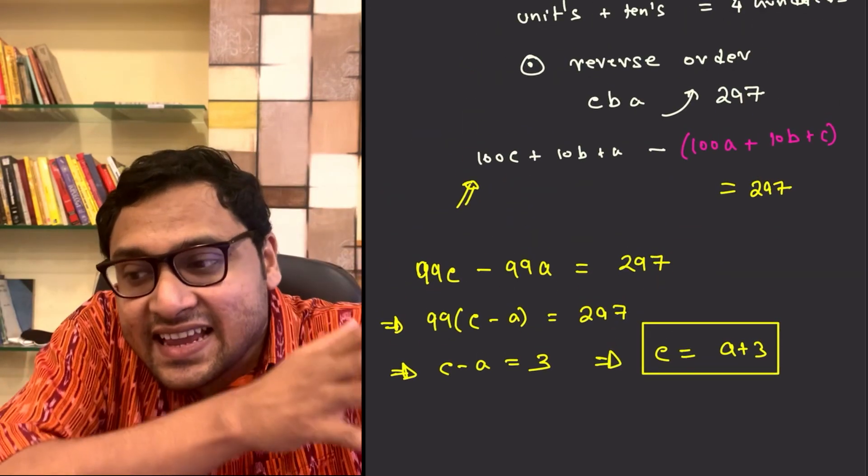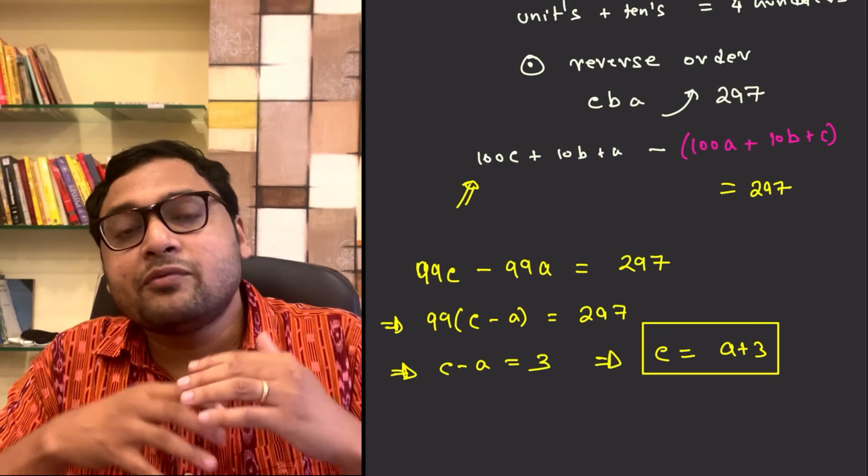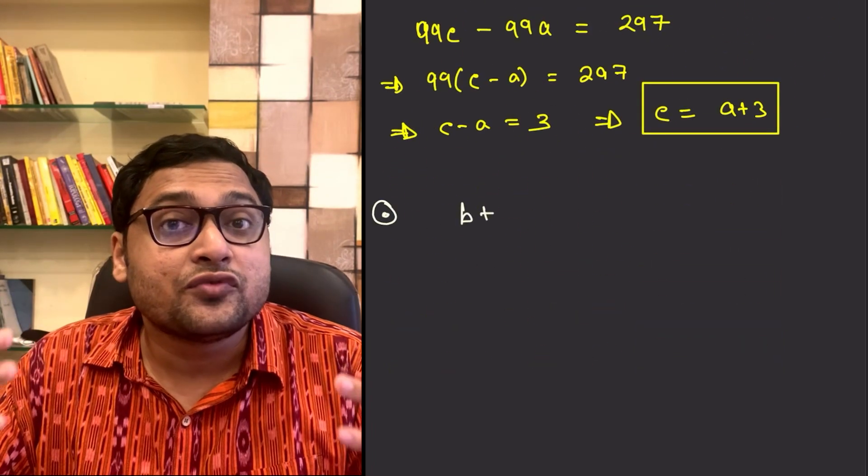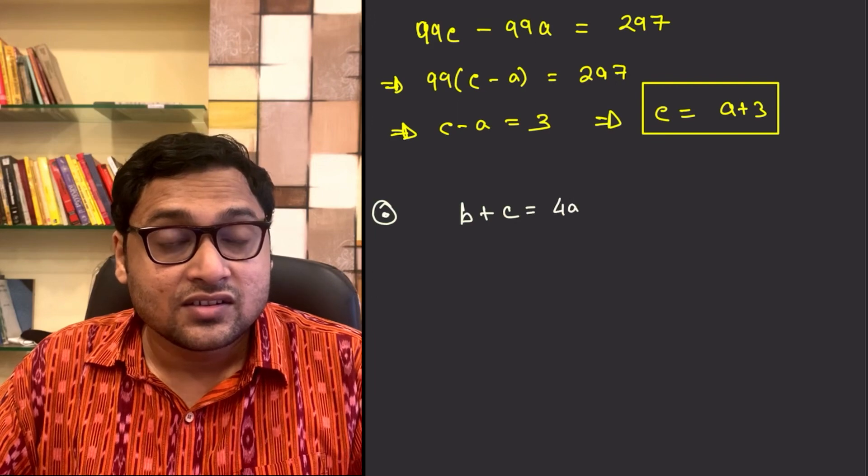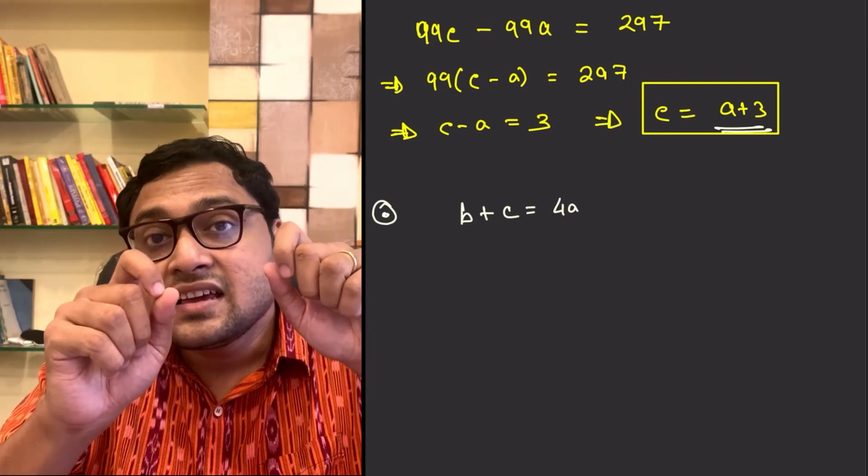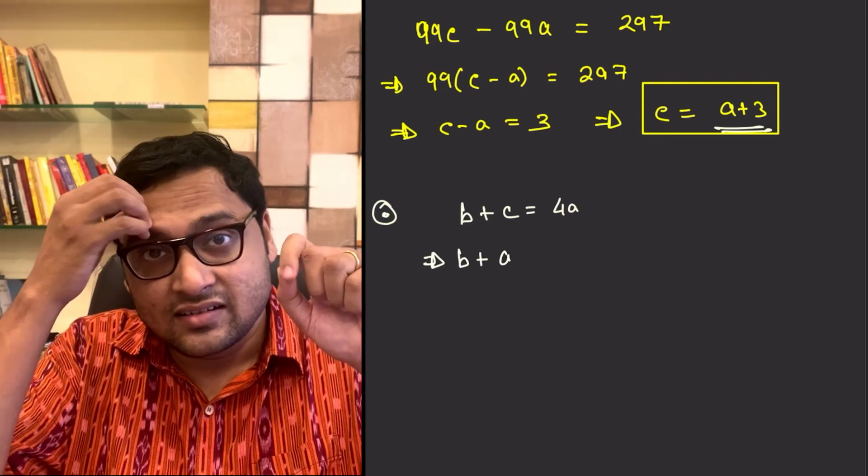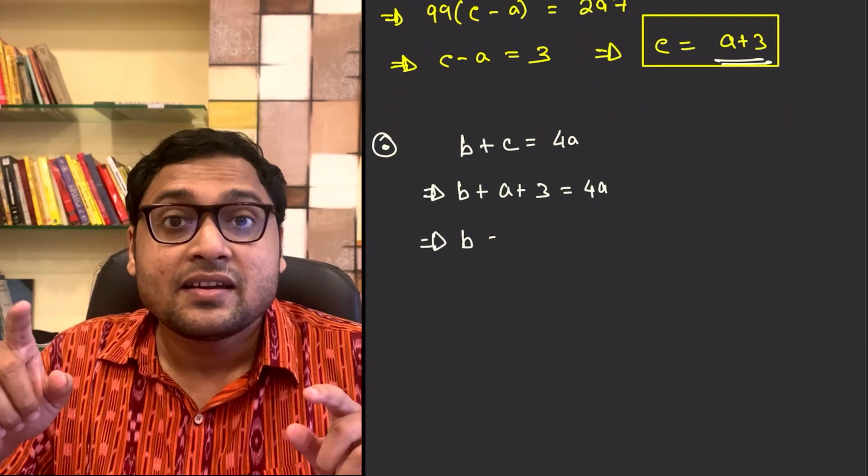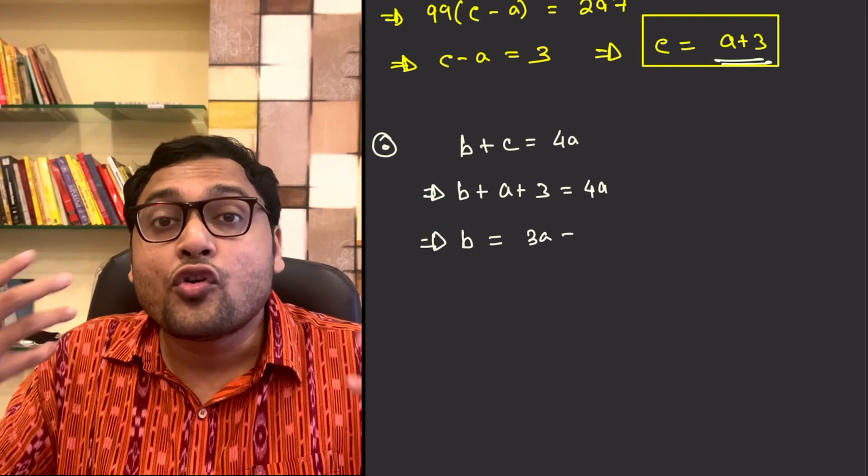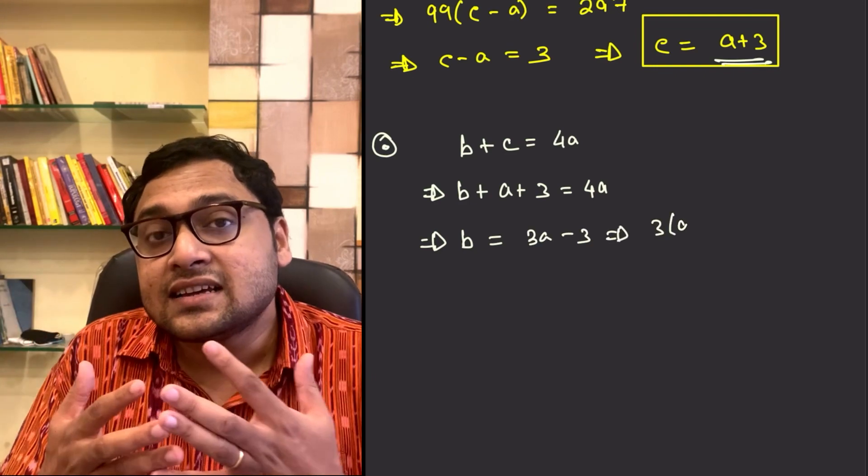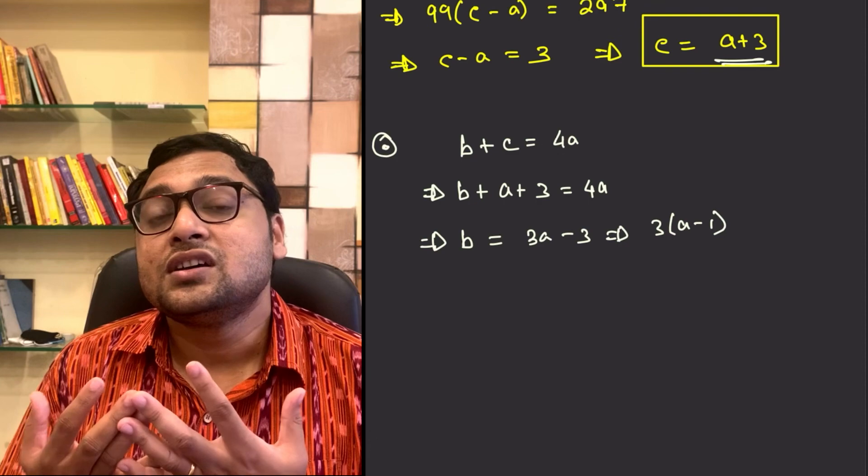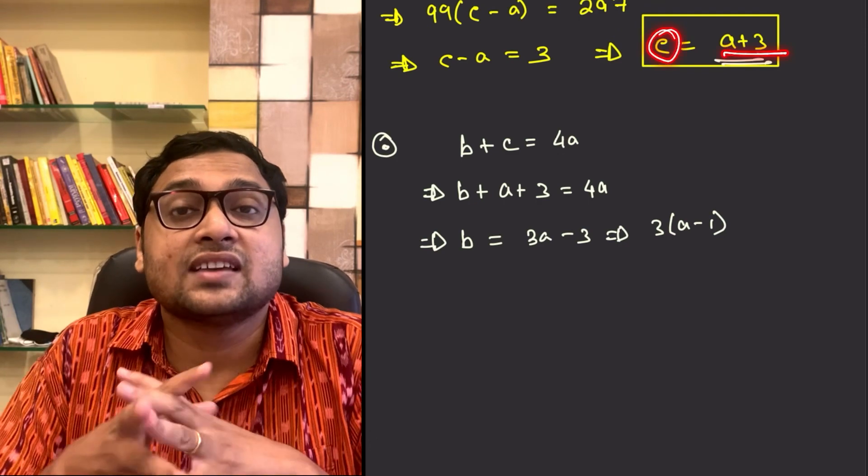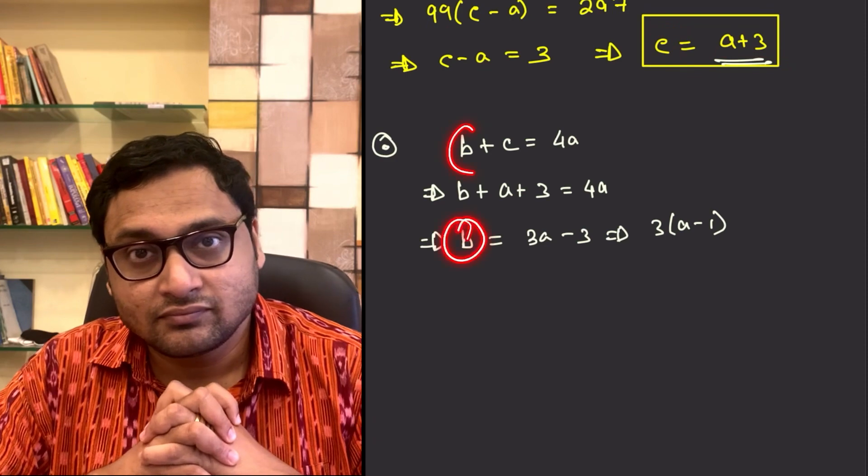Now, we can go back to the second equation where we know that B plus C is equal to 4A. So, if you just replace C by A plus 3 in this equation, B plus A plus 3 is equal to 4A. You will get B is equal to 3 times A minus 3, or 3 times A minus 1.